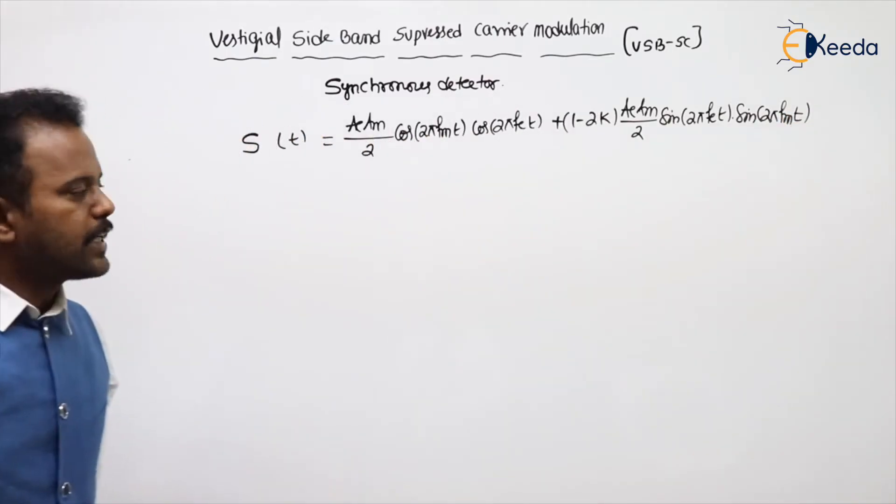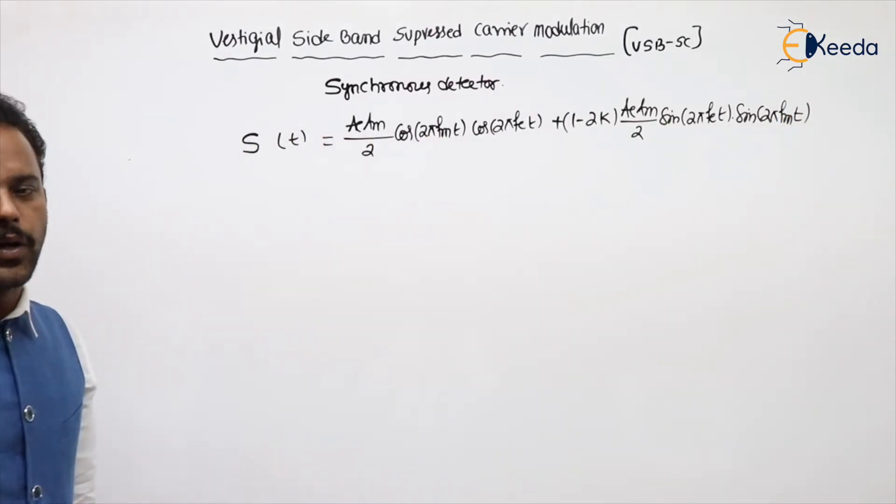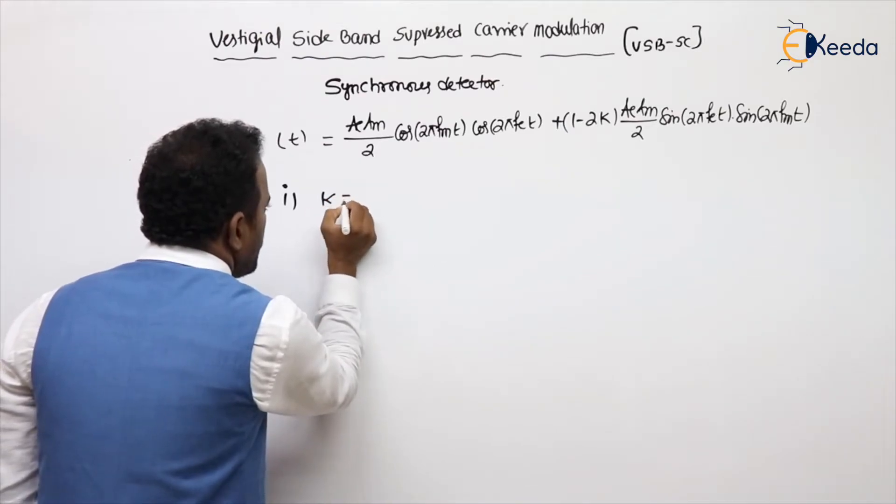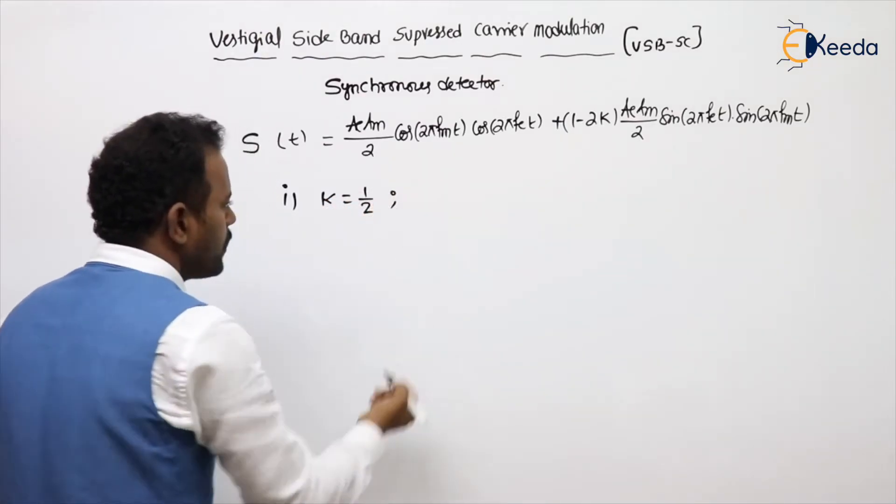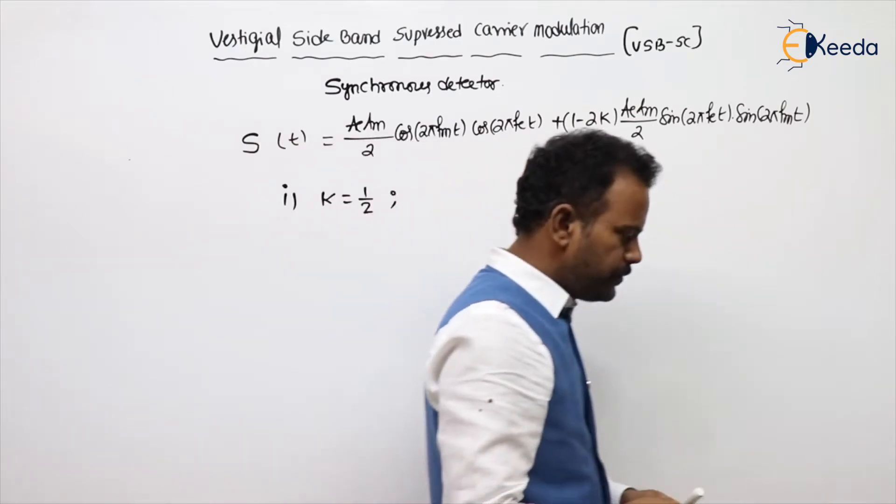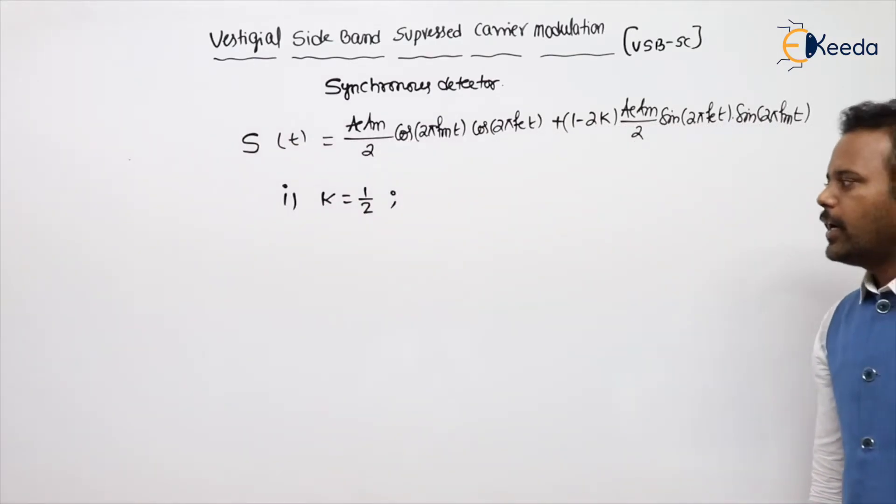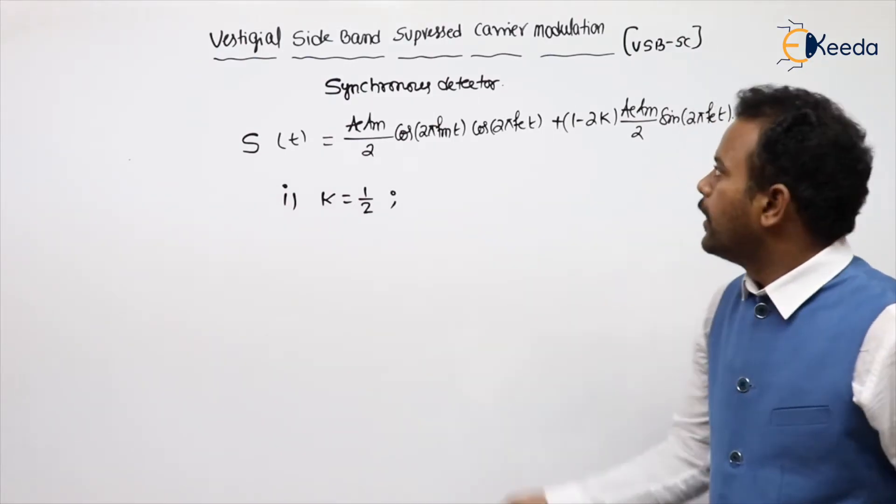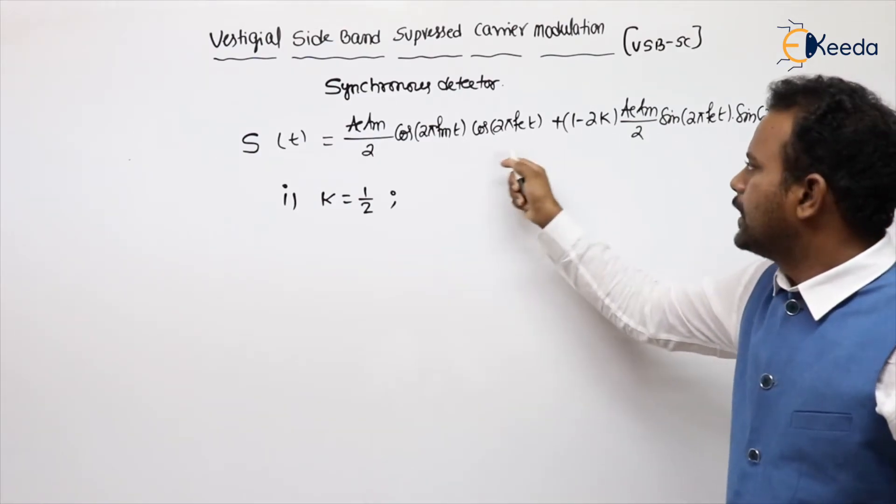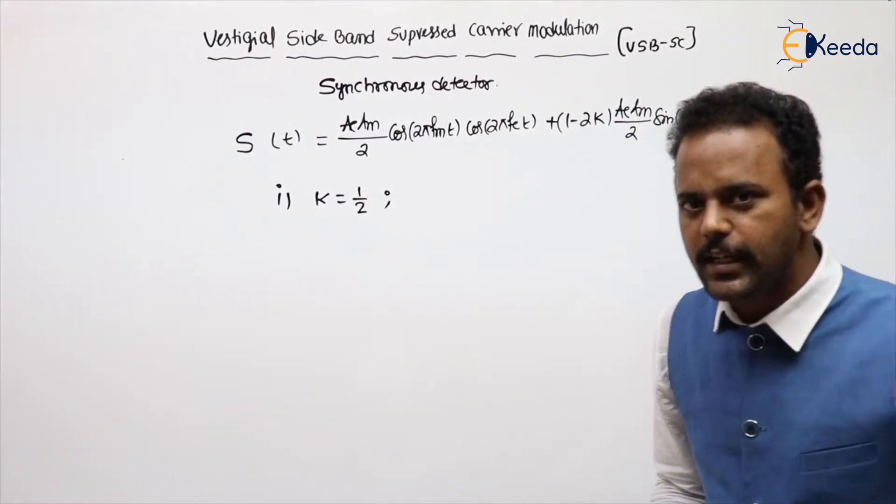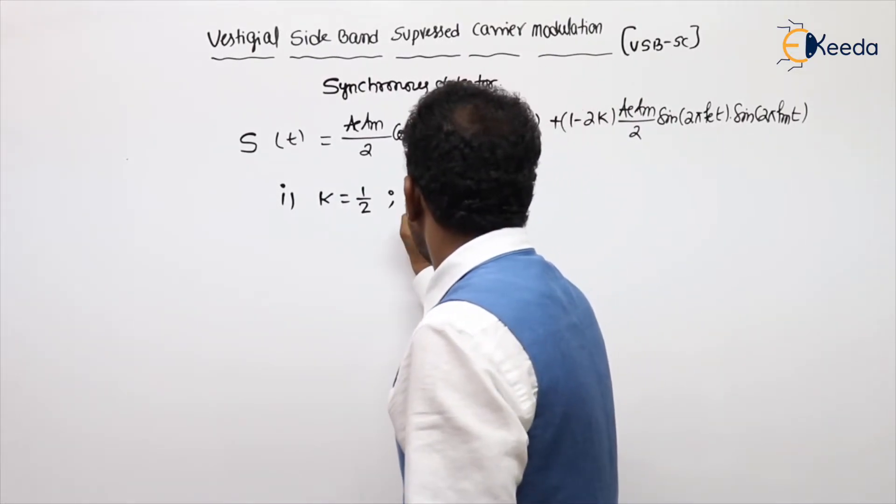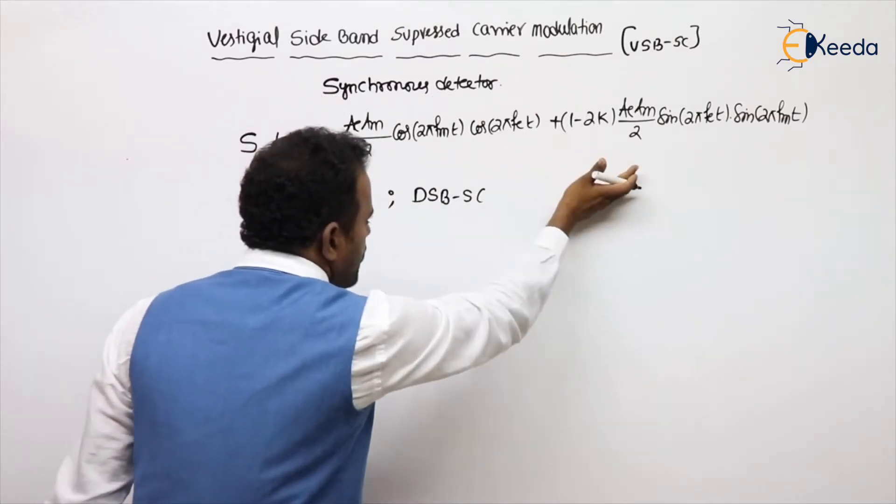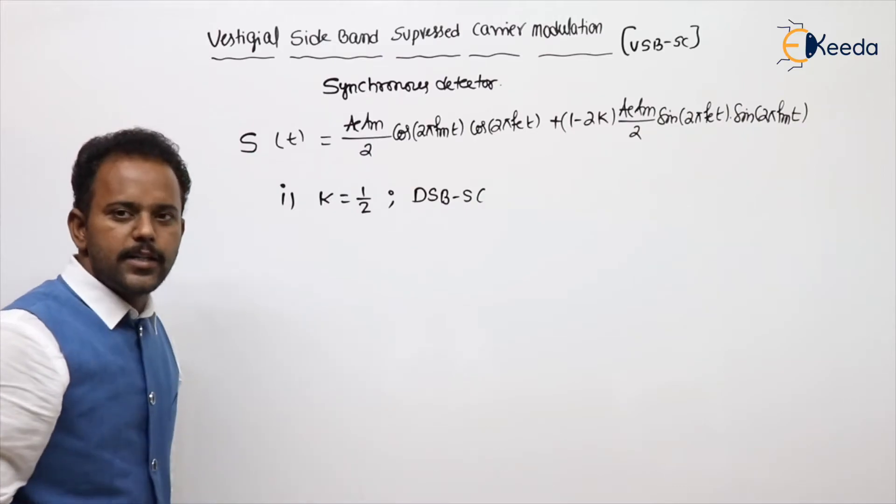This is the general expression for all the sideband modulations. Now try to follow. First case: if k value is 1 by 2, which modulation scheme is coming? If k equal to 1 by 2, this value will become 0, then this is only remaining. If you clearly observe, that is nothing but DSBSC modulation. You can see, multiplying message with carrier, DSBSC.